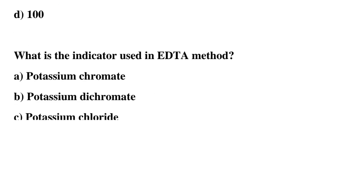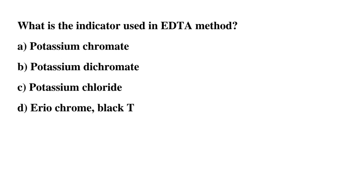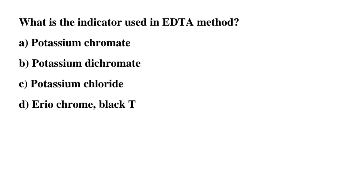Next question: what is the indicator used in the EDTA method? Option A: potassium chromate, option B: potassium dichromate, option C: potassium chloride, option D: Eriochrome Black T. The correct answer is option D: Eriochrome Black T.